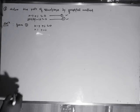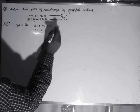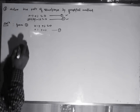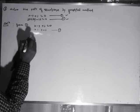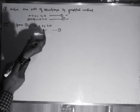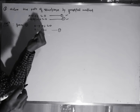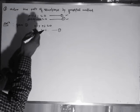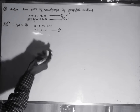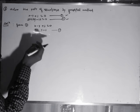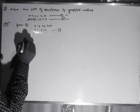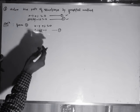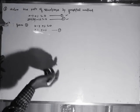Now suppose this is equation number 3. Then putting the value of y here, you can see one variable is completely expressed in terms of the other variable — x in terms of y. So if you put the value of y, we will get some values of x. Putting y equal to something, we get x equal to something.